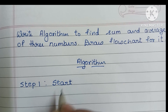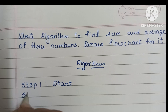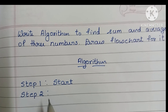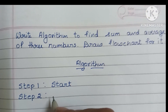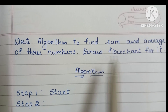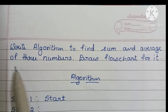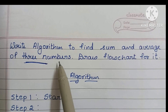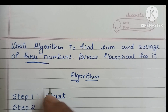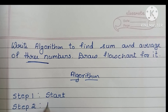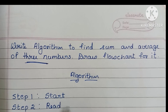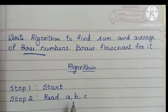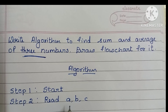First we have to write the start statement. In step two, we have to read the input values. Here we have to read three numbers — that is: read a, b, c. This represents the three numbers we need to find the sum and average of.